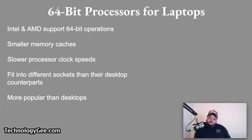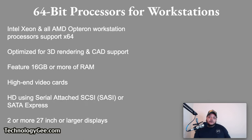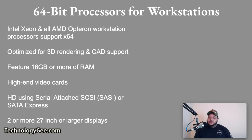For 64-bit workstation processors, most Intel Xeon and AMD Opteron workstation processors support x64. Compared to 64-bit desktop processors, they are optimized for 3D rendering and CAD. Support systems for workstations usually feature 16 gigabytes or more of RAM, high-end video cards for accurate rendering, hard drives using Serial Attached SCSI (SAS) and SATA Express, and two or more 27-inch or larger displays.